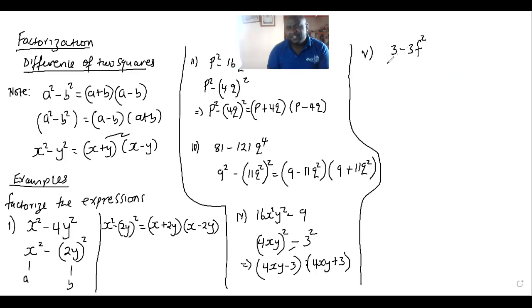One may wonder, is this a difference of two squares? First of all, there are two common factors, 3. So if you factorize out 3, you would realize 1 minus f squared.